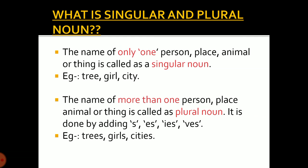A plural noun is the name of more than one person, place, animal, or thing. It is formed by adding the suffixes s, es, ies, or ves to the singular noun. For example, the plural form of tree, girl, and city is trees, girls, and cities respectively.